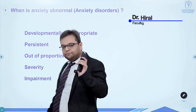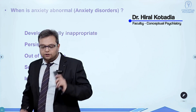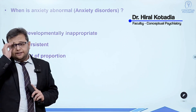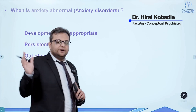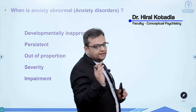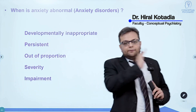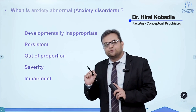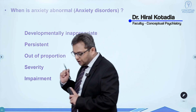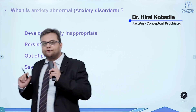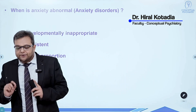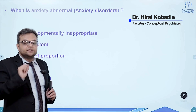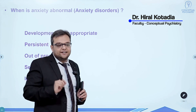Let us first briefly recall what is normal developmental anxiety and what is abnormal anxiety. Developmentally normal anxiety — just a few examples: from 0 to 6 months, anxiety about loud noise and loss of physical touch; from 7 to 10 months, stranger anxiety.